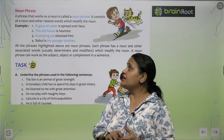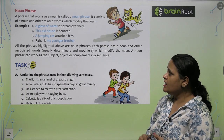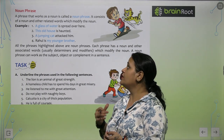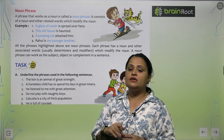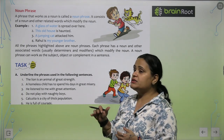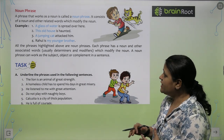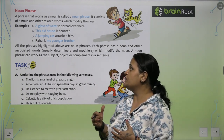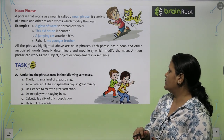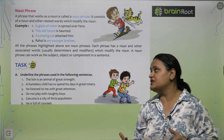Now, the noun phrase. A phrase that works as a noun is called a noun phrase. It consists of a noun and other related words which modify the noun. Examples: 'A glass of water is spread over here.' 'This old house is haunted.' 'A jumping cat attacked him.' 'Rahul is my younger brother.' All the highlighted phrases are noun phrases. Each phrase has a noun and other associated words like determiners and modifiers which modify the noun. A noun phrase can work as the subject, object, or complement in a sentence.